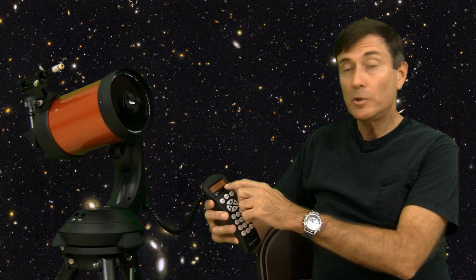Now we're ready to align the telescope. We turn it on, and it says press enter to begin. Then it says to select the method. We're going to choose auto two-star align. Be careful not to select the two-star align. We want to make sure we see the words auto two-star.